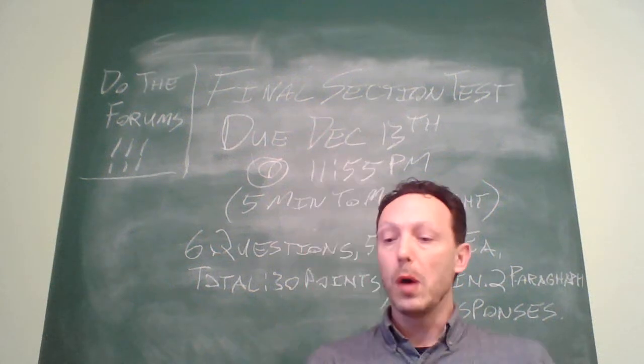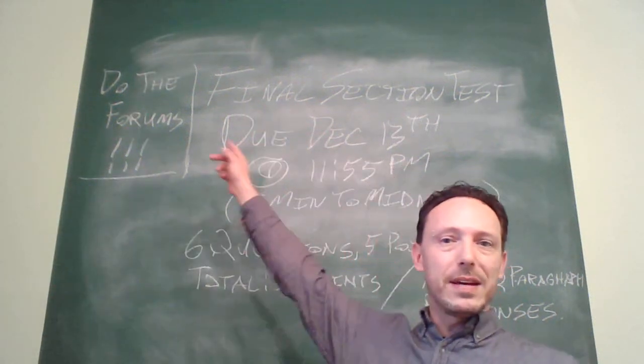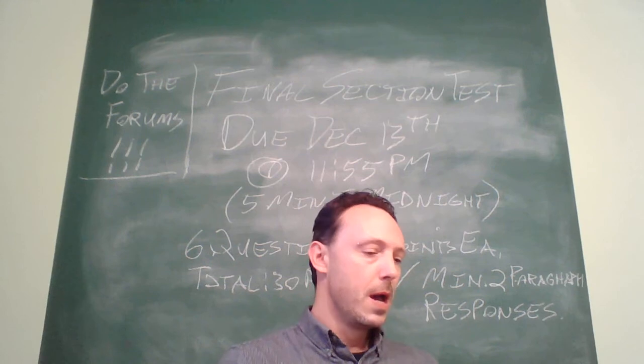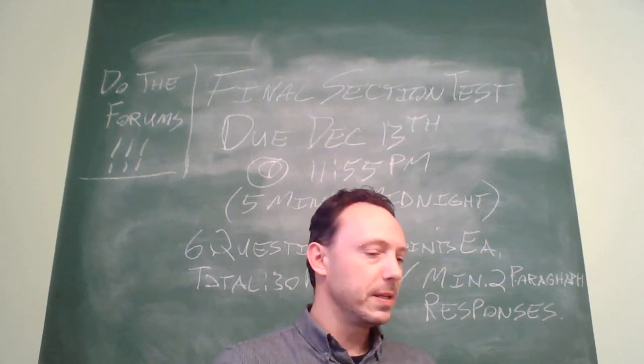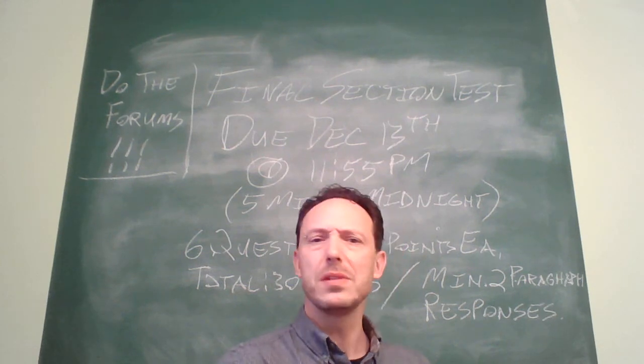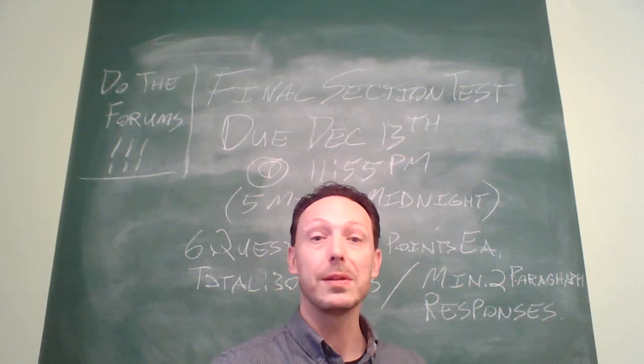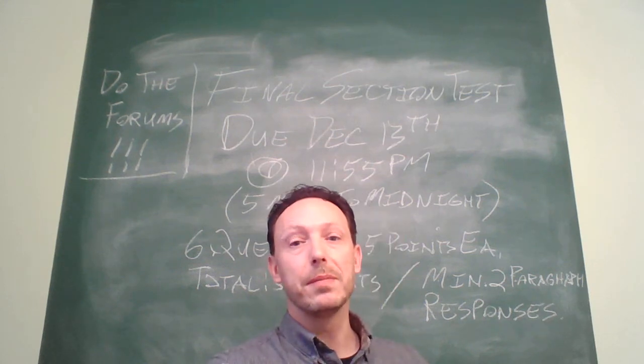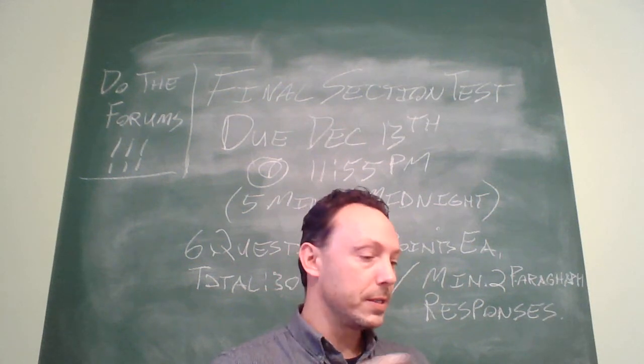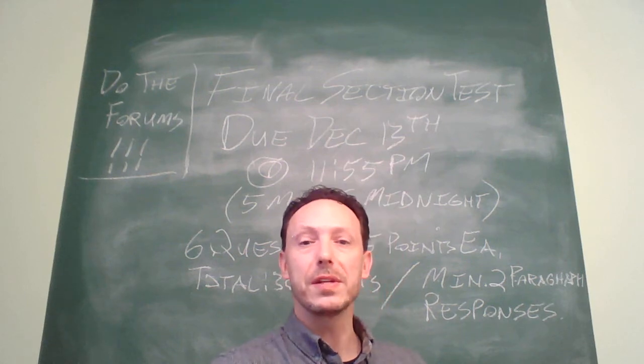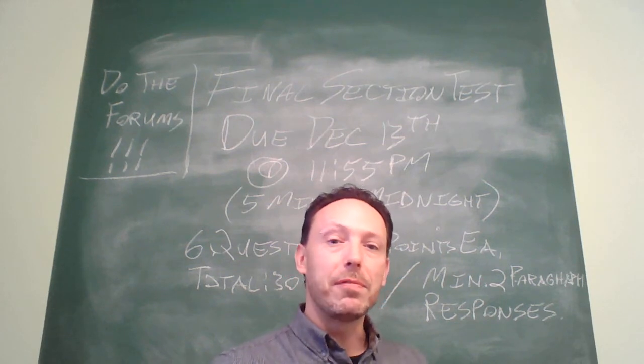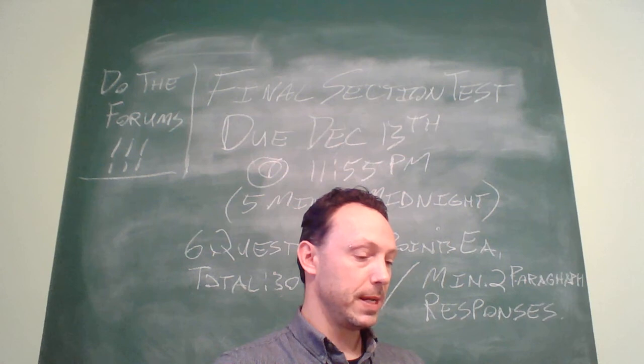Okay, hello. We've reached the end. This will be the final section test due December 13th at 11:55 p.m., five minutes to midnight. By now you should be really used to this, so I'm not going to bother going through the boilerplate. This is all course policy you're used to, missed assignment policy. With regard to the due date for this one, I need to have these grades turned around very quickly, so I can't do much in the way of extensions on this because the Office of the Registrar needs your grade from me within 48 hours of your submission. So that's a thing.